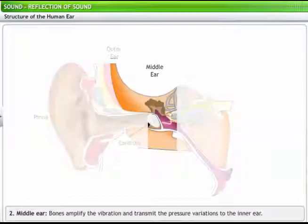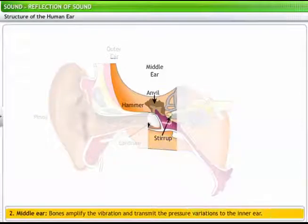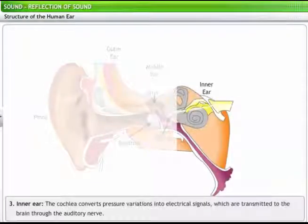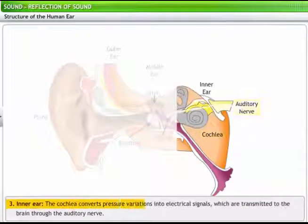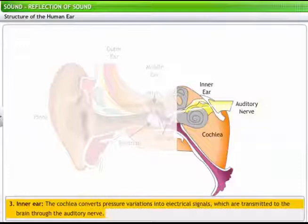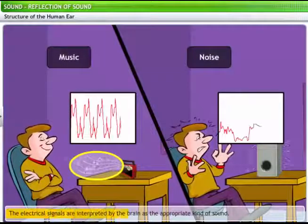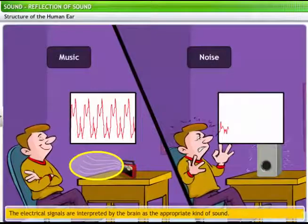The middle ear is comprised of three bones: the hammer, anvil, and the stirrup. These bones amplify the vibration and transmit the pressure variations of the sound waves to the inner ear. The inner ear is comprised of various parts, including the cochlea and an auditory nerve. The cochlea converts the pressure variations into electrical signals. Then, these signals are transmitted to the brain through the auditory nerve. These electrical signals are interpreted by the brain as the appropriate kind of sound.